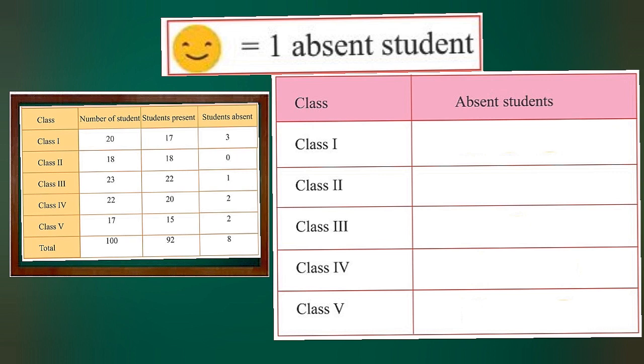Let's make the pictograph. 3 students are absent in class 1st, so we will draw 3 smiley faces. No student is absent in class 2nd, so there will be no smiley face. 1 student is absent in class 3rd, so we will draw 1 smiley face. 2 students are absent in class 4th, so we will draw 2 smiley faces. Class 5th also has 2 absent students, so we will draw 2 smiley faces.